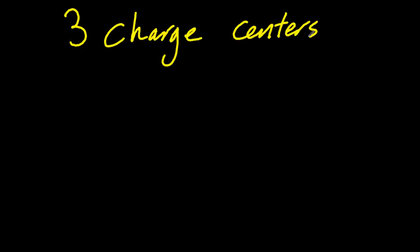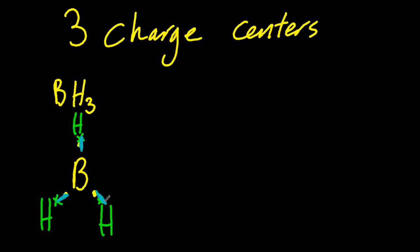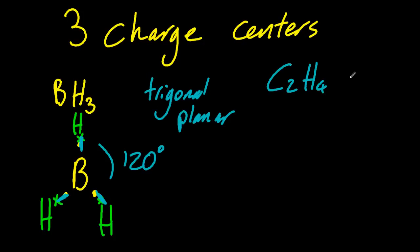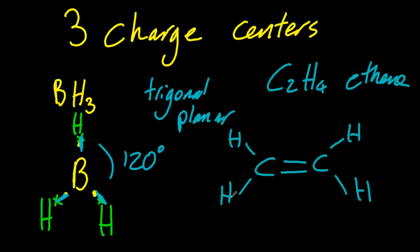The previous ones were four charge centers. Let's look at three charge centers. The most common one is boron trihydride. Boron's in group 3, so put three valence electrons. Hydrogen group 1, one each. Now you'll notice that boron's weird. It has a stable sextet. It's stable with six electrons. And so there's three charge centers. That gives you trigonal planar, 120 degrees. Ethene also has three charge centers on each carbon. Gives you 120 degrees.